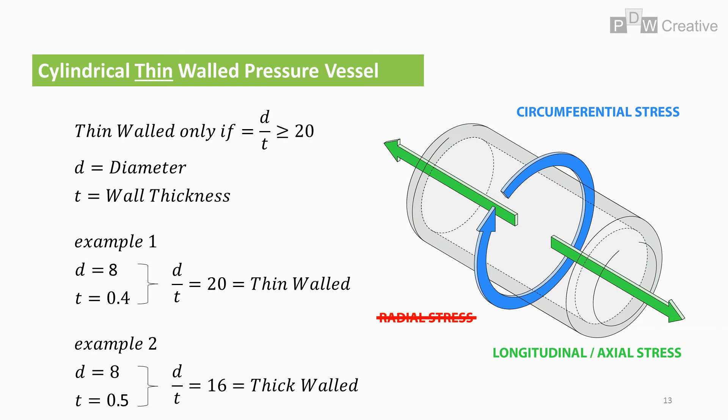Just for reference, if we use the diameter instead of radius, the ratio threshold becomes 20. Right, so I've covered thick walled vessels in another video, so for the rest of this tutorial we'll just focus on the thin type.